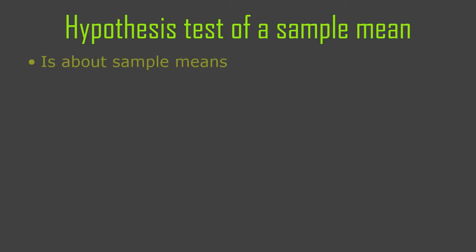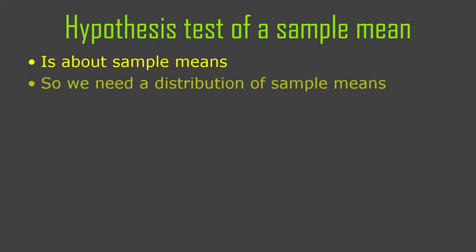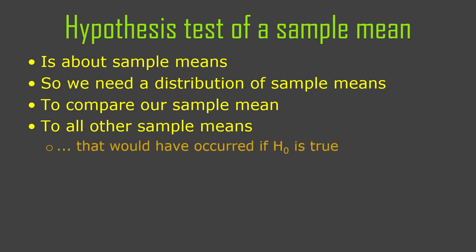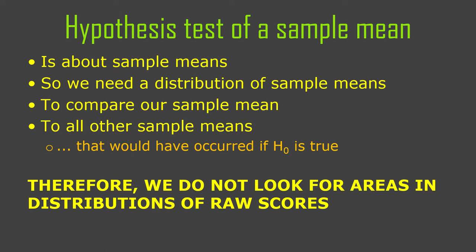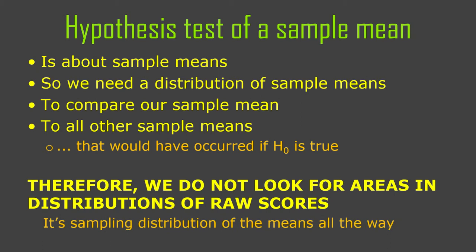The hypothesis test of a sample mean is about sample means. So we need a distribution of sample means — we need that to compare our sample mean to other sample means that would have occurred if the null hypothesis is true. It always has to be apples to apples. If we have a sample mean and we want to know anything about it, we have to compare it to other sample means. We look for areas in sampling distributions of the mean, not distributions of raw scores.